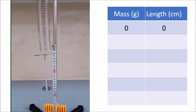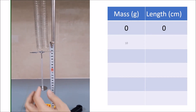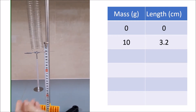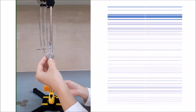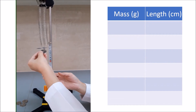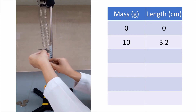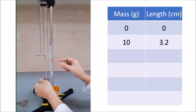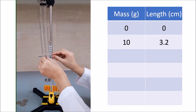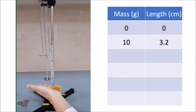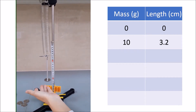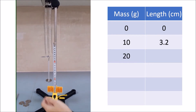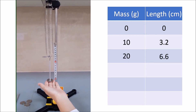Our first reading is 3.2 centimeters. Adding another 10 grams, the second reading for 20 grams is 6.6 centimeters.